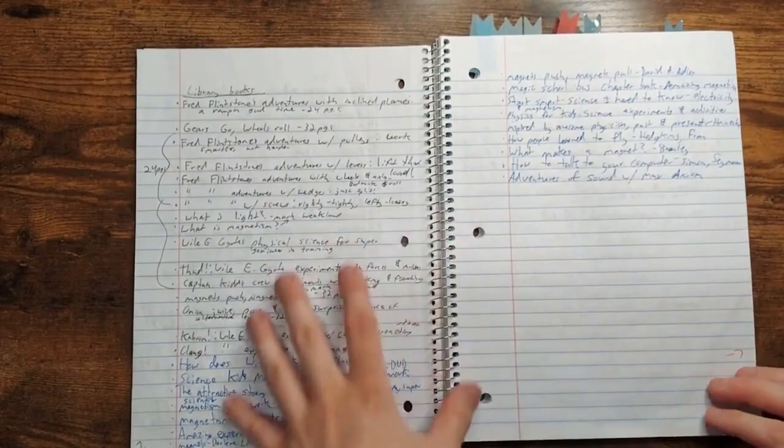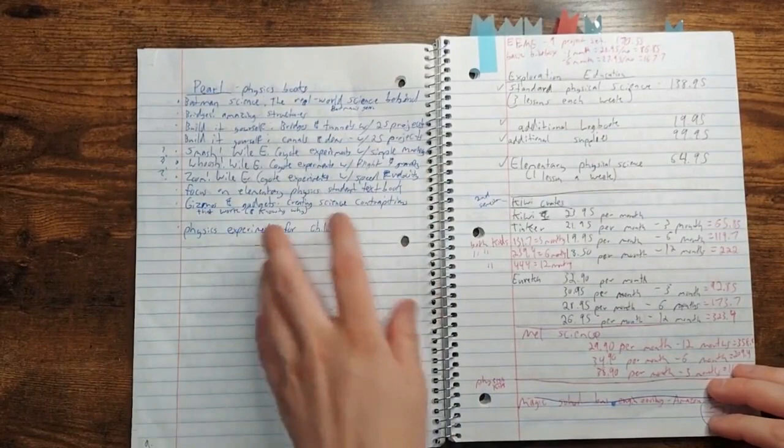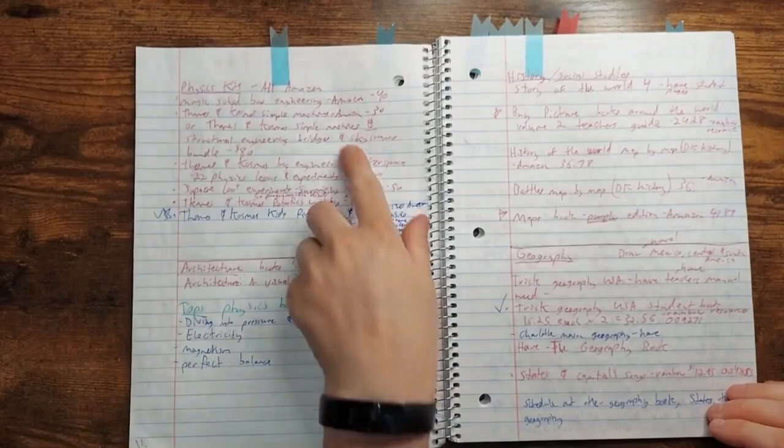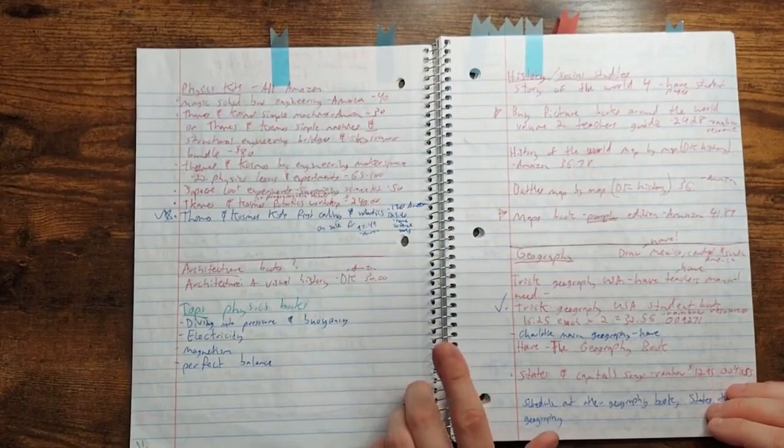And then different library books that I found that have to do with physics. And then possible books to get from our distance learning program. And here are the prices of the different subscription crates. And then extra physics kits from Amazon I might get. And then different tops physics books if we wanted to go even deeper.